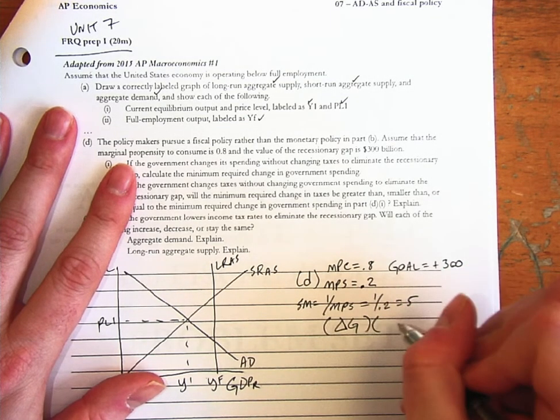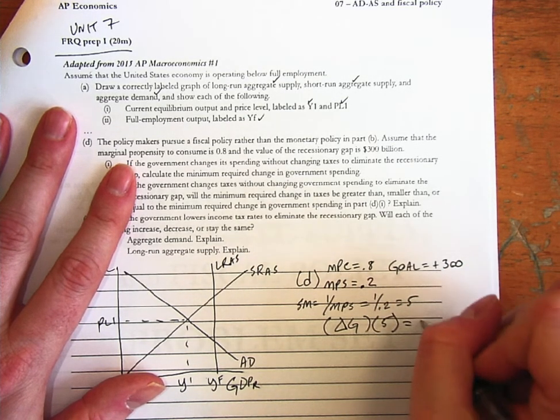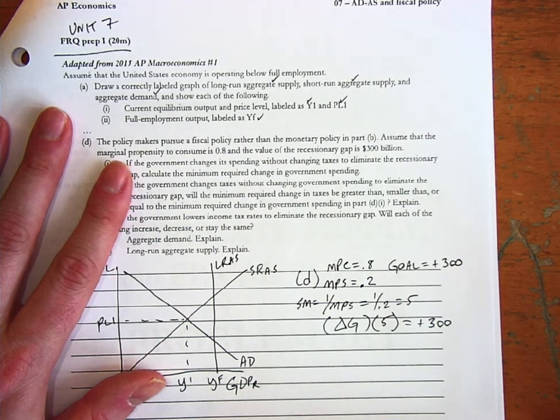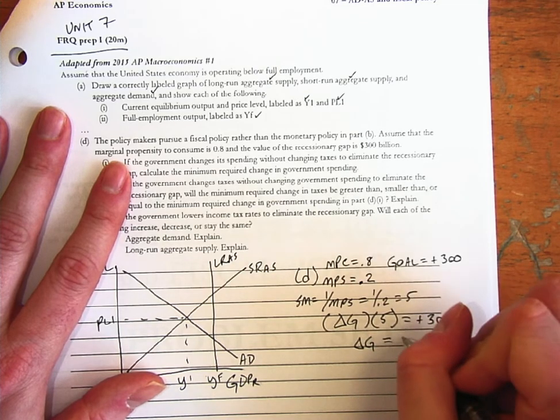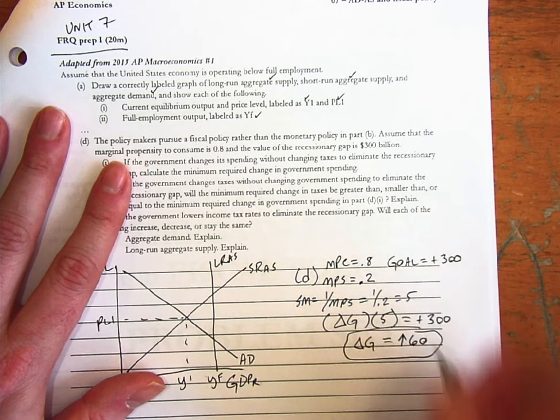And now we can solve the problem. Change in G times 5 equals positive 300. So what goes into 300 five times is 60. So change in G equals increase by 60.